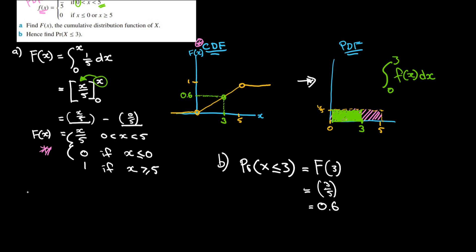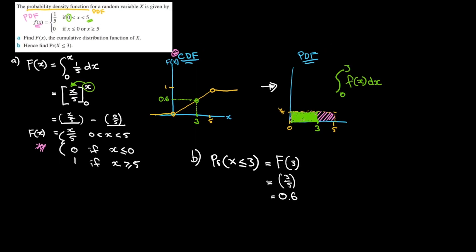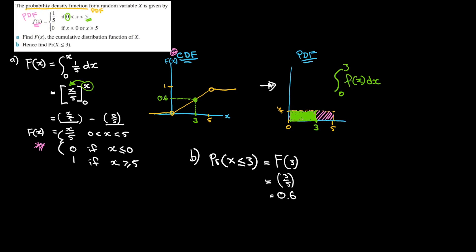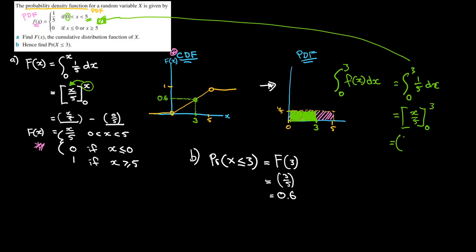So the probability that x is less than or equal to 3, using the cumulative distribution function, is 0.6. You could also use the probability density function if you want — and verifying quickly using our PDF gives the same result. Either way, both the CDF and the PDF give you the same result, which is very nice.